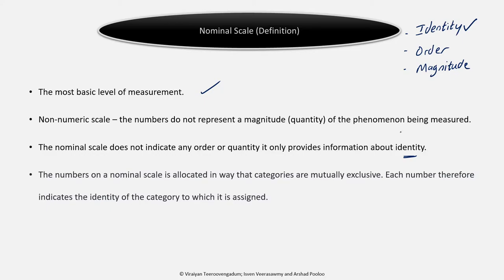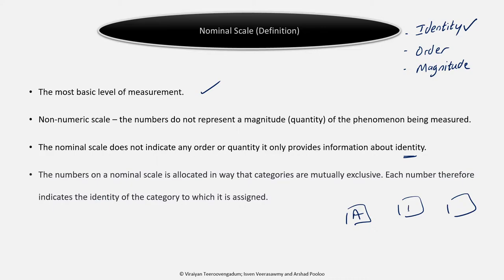The only rule for a nominal scale is that the numbers should be mutually exclusive — they should not be the same. You can have different categories, and you assign different numbers to each. It could be 1, 2, 3 or any other numbers, provided the numbers are different for each category. The order doesn't matter. The numbers only allow you to differentiate between the categories of responses. That's what a nominal scale is about.